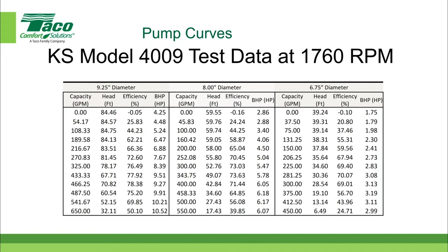He continues collecting data for the 9.25-inch diameter impeller. Then at the end of that test, he dismantles the pump, removes the 9.25-inch impeller, and installs an 8-inch diameter impeller, repeating the process all over again. Then he does it a third time, installing a 6.75-inch diameter impeller, repeating the data collection. So he uses this information to collect data for three distinct impeller diameters.